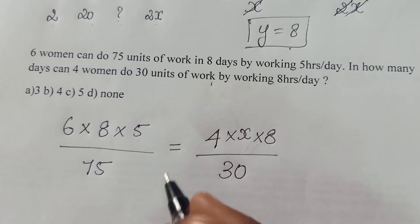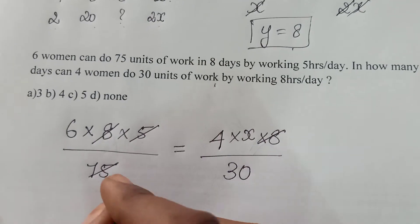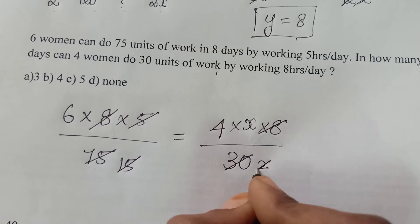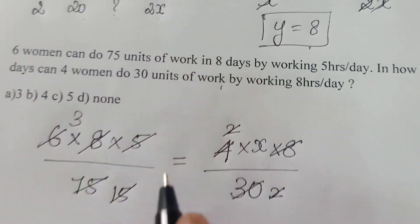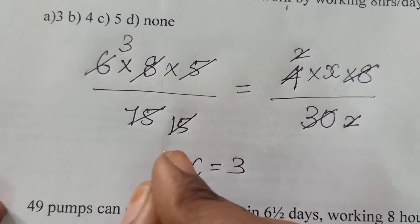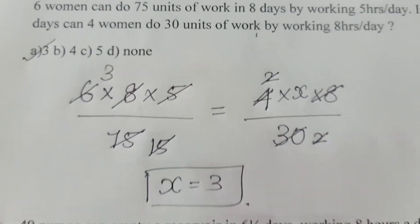So just cancel it. 8 and 8 will get cancelled. In 5 table, 75 is 15 times. In 15 table, 30 is 2 times. In 2 table, 4 is 2 times. Again in 2 table, 6 is 3 times. Just cancel it out. So you will get the answer. The value of x will be 3. So in this question, the answer will be 3 days.